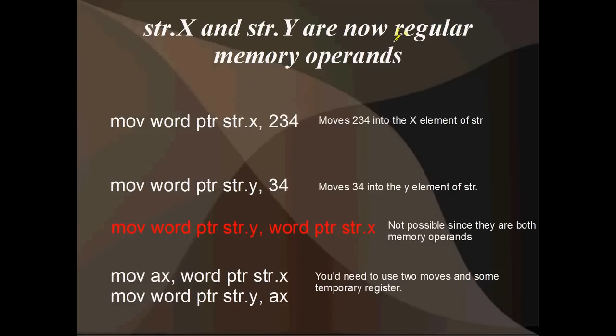Okay, so STR.X and STR.Y, once you've defined them in your data segment, and once you've defined an instance of a structure, STR.X and STR.Y are perfectly normal memory operands. So it's basically the same syntax as C. You've got the structure's name, or the instance's name, which is STR in our case, and then dot and whatever parameter you want to access. You could move something into STR.X with this line: mov word ptr STR.X, 234. Or you could move something into Y, STR.Y, that's much the same thing.